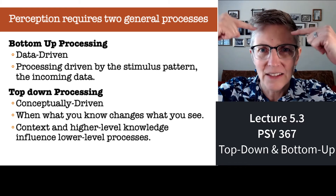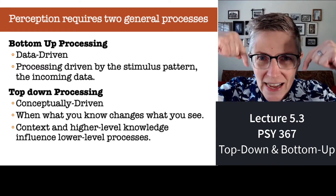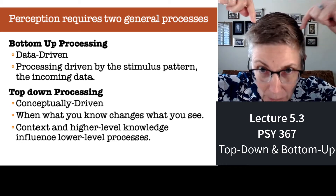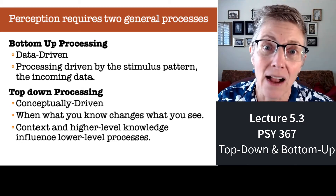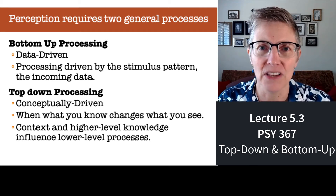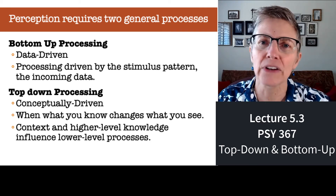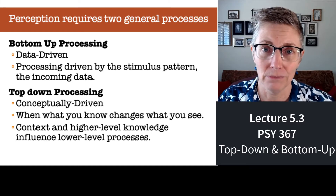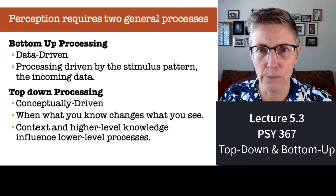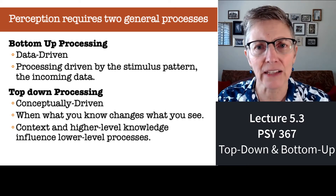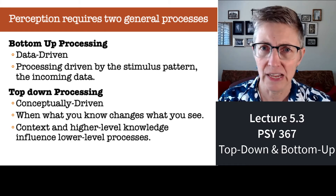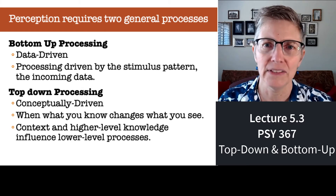Top-down is using my brain to change what I see — going from my brain down to my eyes, my ears, or my skin. So top-down processing is when your experience changes your perception. It's context effects, higher-level knowledge, expectations — all of those things change what you see in the world, and we call that top-down processing.